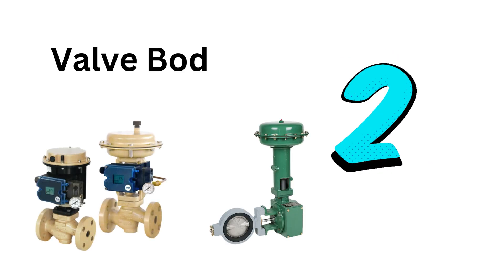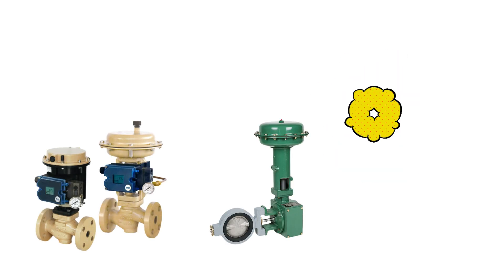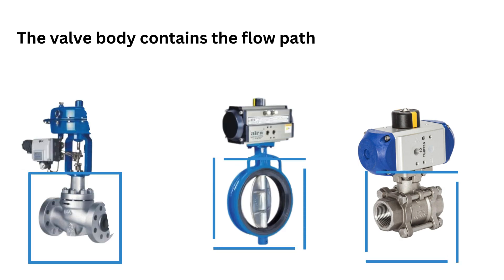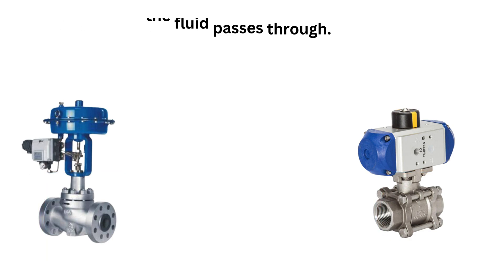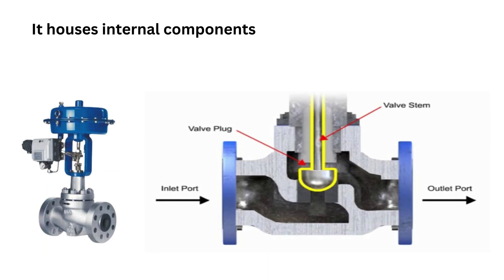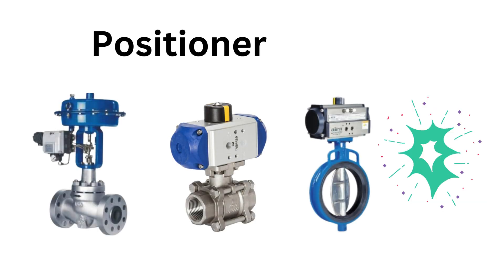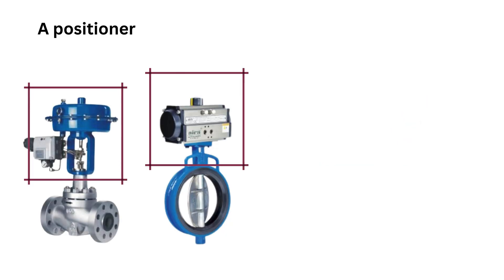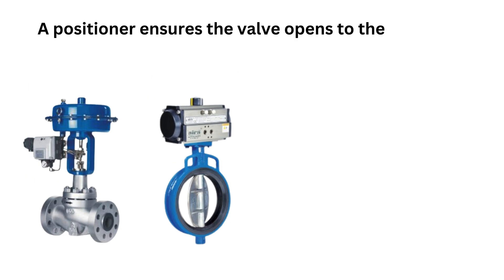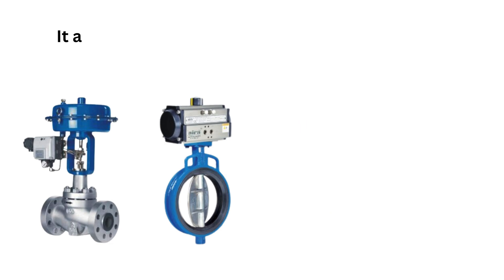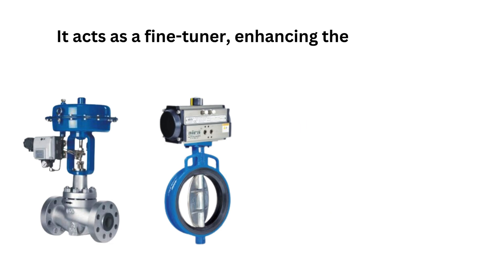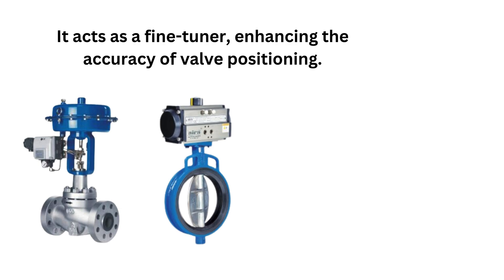The second component is the valve body. The valve body contains the flow path and is where the fluid passes through. It houses internal components like the plug, seat, and stem. The third component is the positioner. A positioner ensures the valve opens to the correct degree based on the control signal. It acts as a fine tuner, enhancing the accuracy of valve positioning.